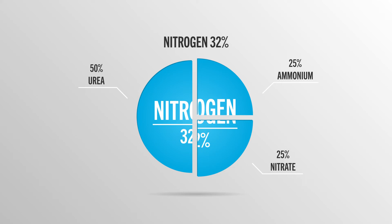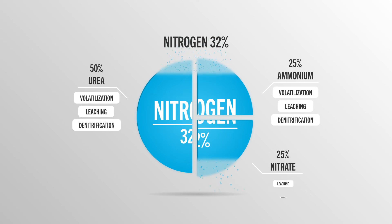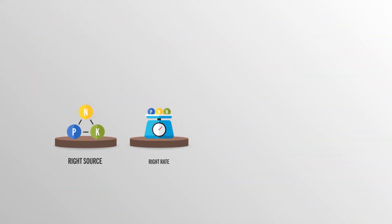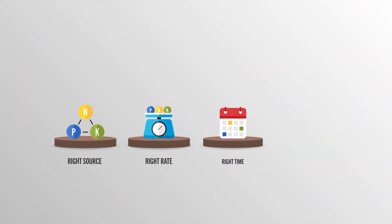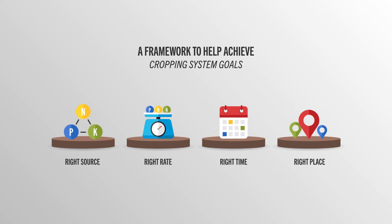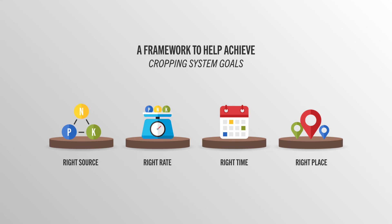As mentioned earlier, UAN, due to its nitrogen composition, can be at risk to all three forms of nitrogen loss. If a grower doesn't adhere to the 4R's nutrient stewardship — a framework to help achieve cropping system goals on their operation — which can include the use of a urease inhibitor, nitrification inhibitor, or both, a grower's investment in nitrogen can be left to chance.